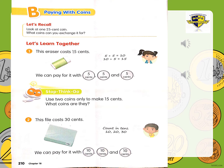Let's learn together. Question number one. This eraser costs 15 cents. Let's see how we can pay for it. We can pay for it with three 5-cent coins. We can make 15 with 5 and 5, that is 10, and we can add another 5, which makes 15. So 15 cents can be paid by three 5-cent coins.